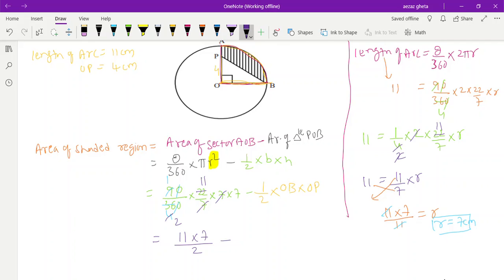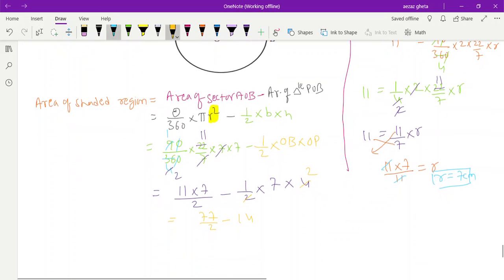77 divided by 2 minus 14. Instead of taking LCM you can just divide this 77 by 2 - 38.5, half of 77 is 38.5 minus 14. 38.5 minus 14 is 24.5. This is shaded region, centimeter square. Any doubts boys and girls? Any doubts?